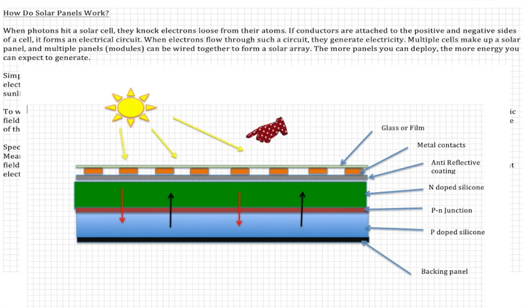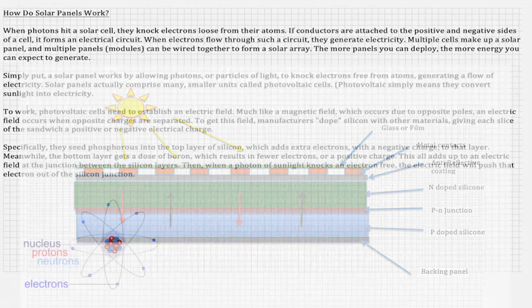This all adds up to an electronic field at the junction between the silicon layers. When a photon of sunlight knocks the electron free, the electric field will push the electron out of the silicon junction.